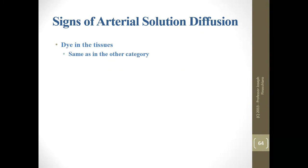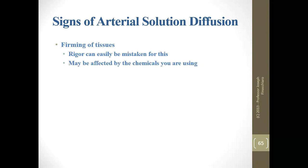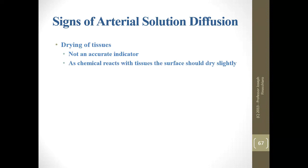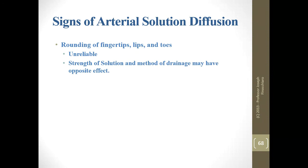Firming of tissues is a sign of diffusion — if you pinch the tissue and it is losing skin elasticity, diffusion is happening because that is formaldehyde reacting with protein centers. Be careful though, as rigor or frozen tissues can show the same type of firming. Loss of skin elasticity — pinch gently and it slowly returns to normal — is one of the most commonly used indicators for diffusion. Drying is not a reliable indicator. Rounding of fingertips, lips, and toes is also unreliable, as it could be edematous fluid or the solution could be pulling water out and dehydrating the tissue.